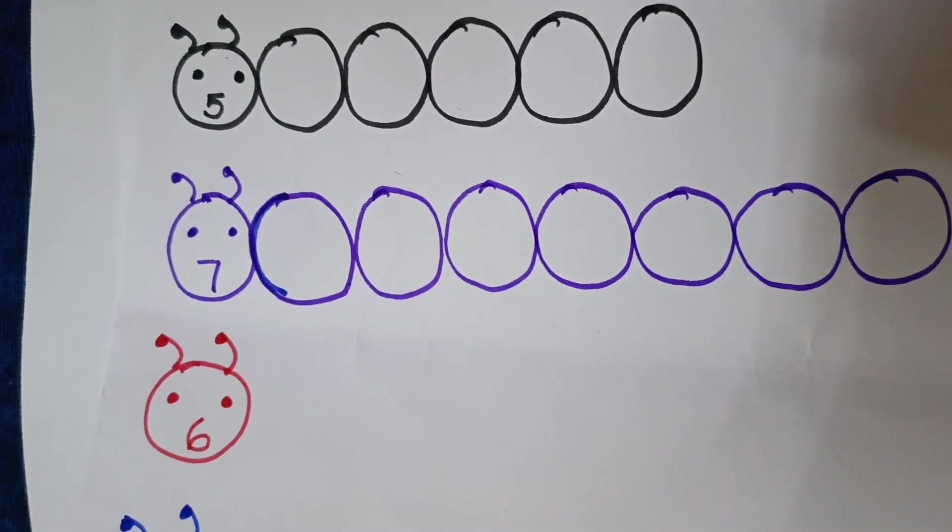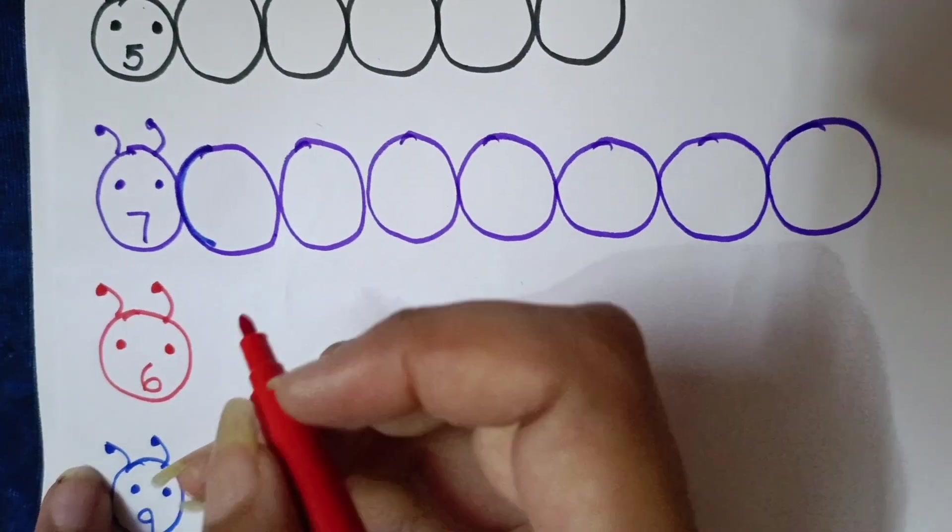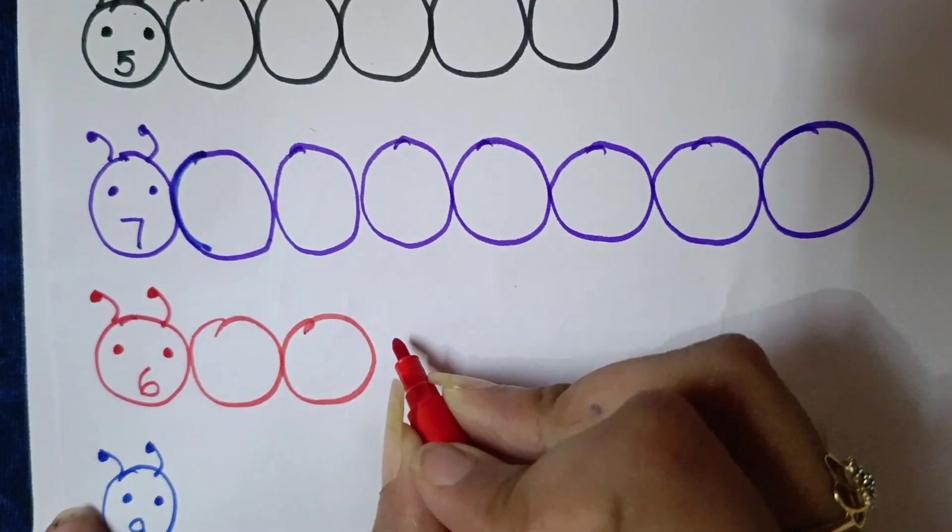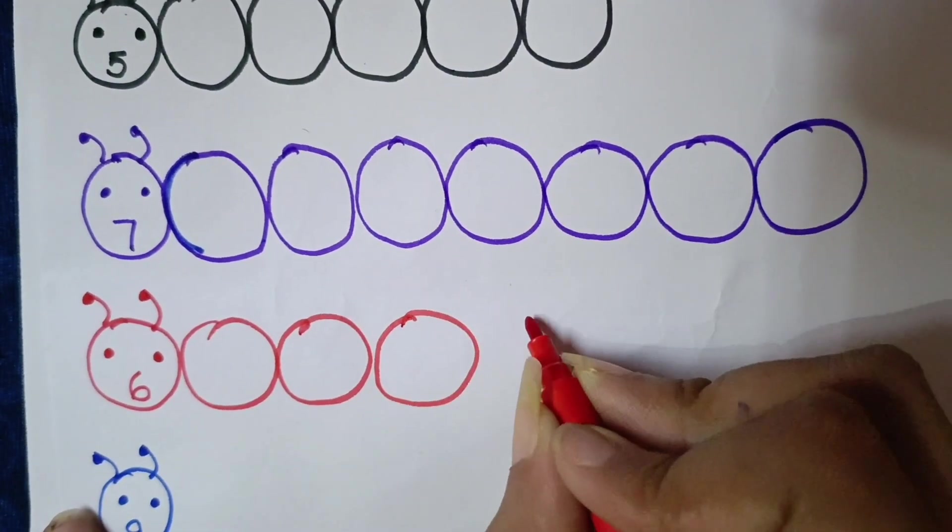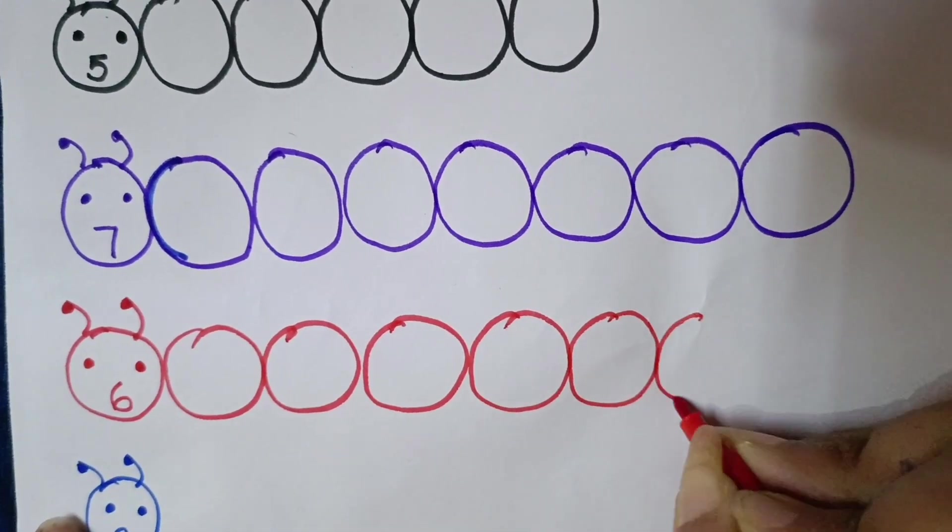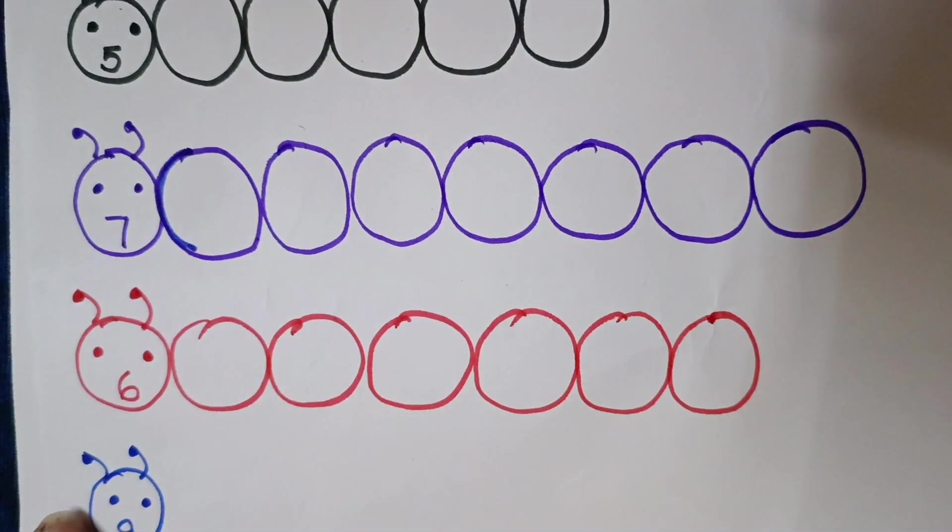Next number is 6. So, we will draw here 6 circles. 1, 2, 3, 4, 5 and 6.